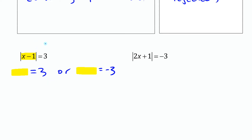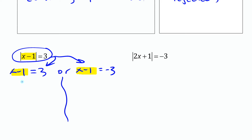To eliminate the absolute value brackets, you're going to split this into the two possible cases: either x minus 1 is 3, or x minus 1 is negative 3. Once you do that you can solve each one separately. If x minus 1 is 3, adding one to both sides gives x equals 4. Or if x minus 1 is negative 3, adding one gives x equals negative 2. So you've got those two solutions.